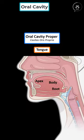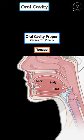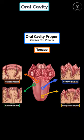The tongue, with its three parts, plays a vital role in speech and taste. Taste buds on the papillae sense different flavors and are located on different areas of the tongue.